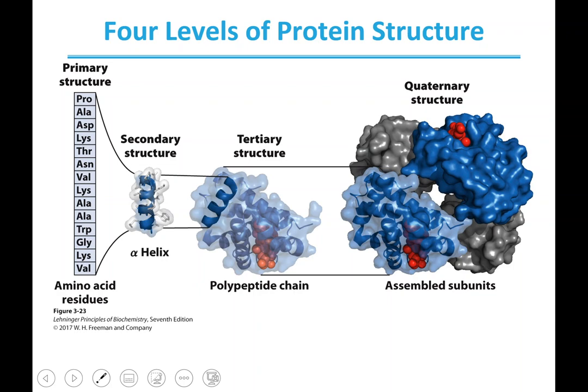There are four levels of protein structure, and the figure does a decent job of explaining them. The first is called primary structure, which is just the sequence of amino acids and how they're connected — proline, alanine, aspartic acid, lysine, and so on. The order in which they appear in the chain is the primary structure.